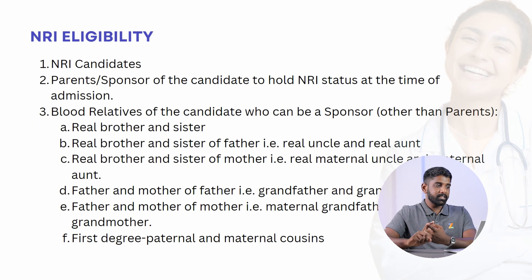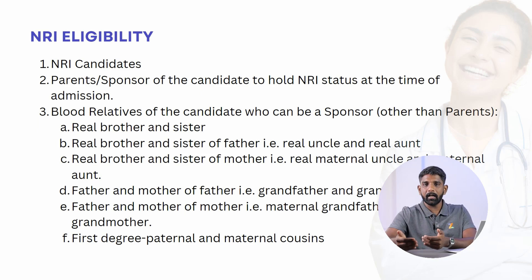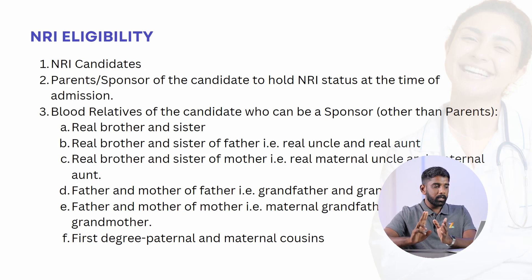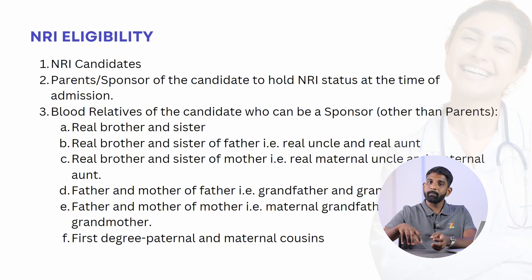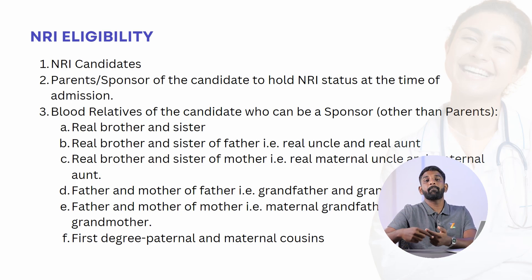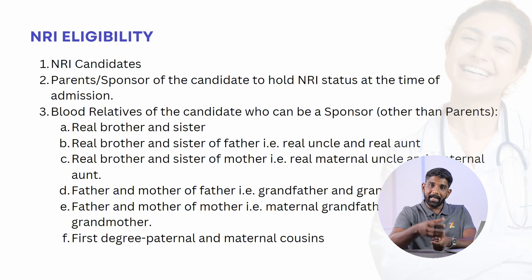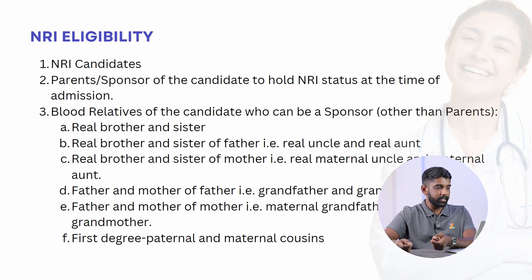There are two eligibility paths. First, if the candidate themselves is an NRI, they will automatically be able to take the NRI seat. Second, if the candidate is not an NRI and is living in India but their parents or relatives are abroad, then those parents or relatives will be able to sponsor the candidate.